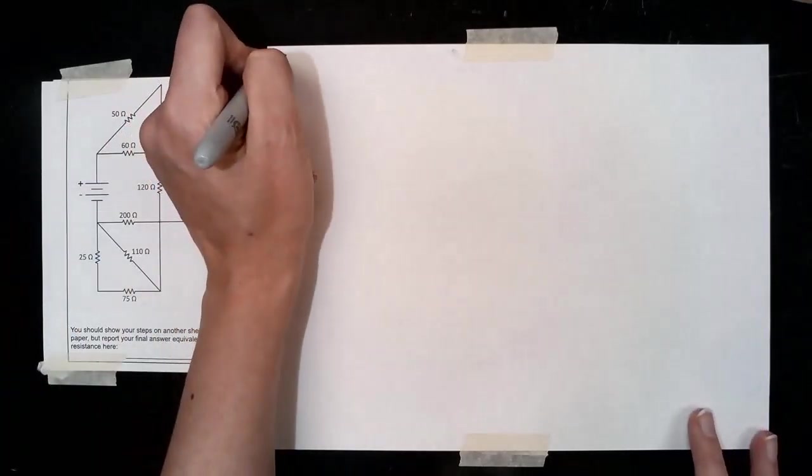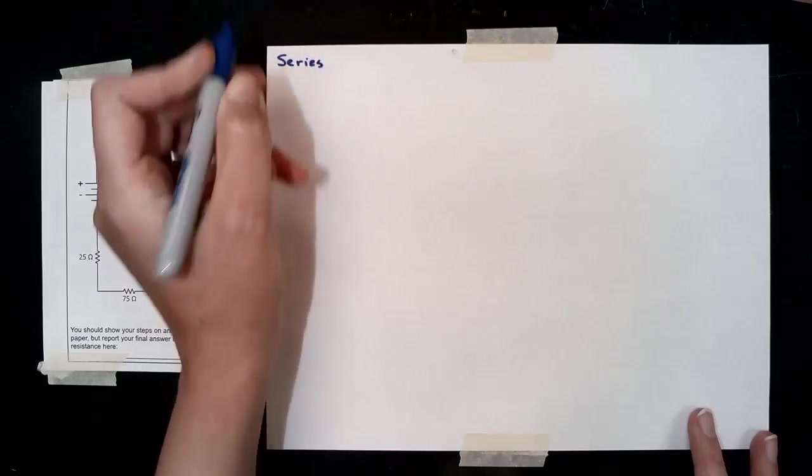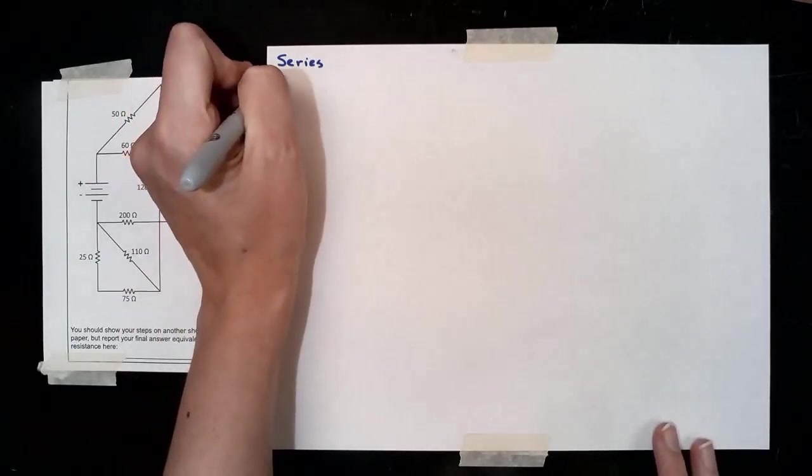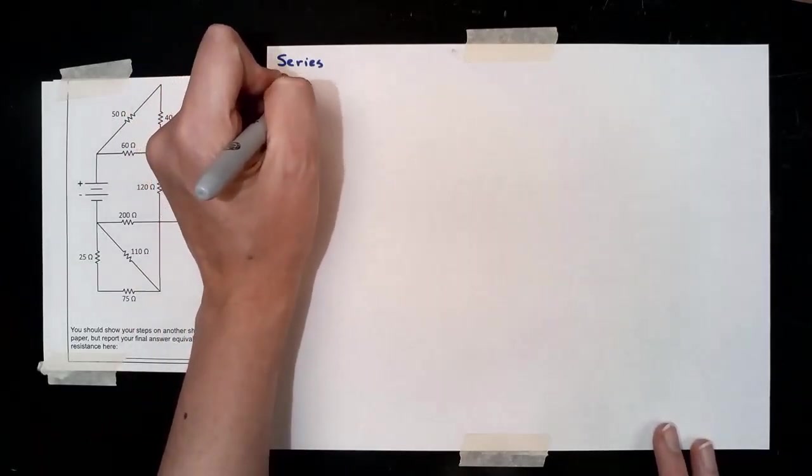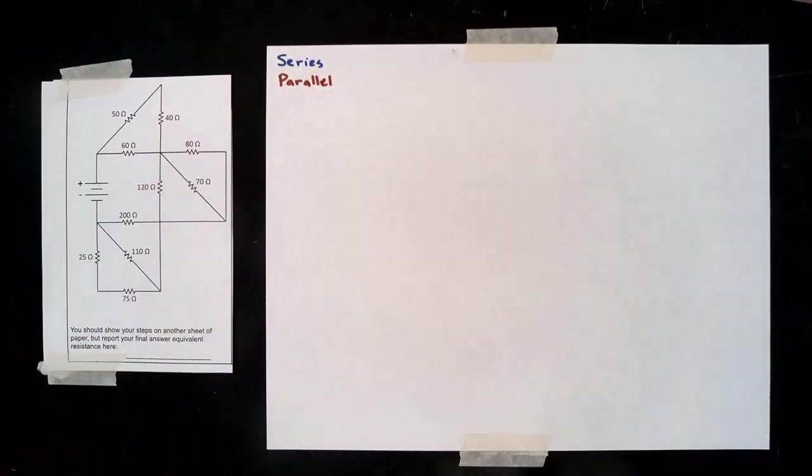We're going to start with making sure that we know how to look for series and parallel. When we're looking for series, we're looking for two or more resistors that are along the same wire, so current can only flow in one spot.